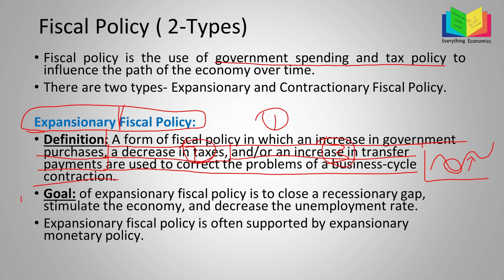The goal of expansionary fiscal policy is to close a recessionary gap, stimulate the economy, and decrease the unemployment rate. When the economy is in a recessionary period, the government uses this policy to reduce that gap and stimulate the economy. At this point the unemployment rate is high because there is not much activity going on and many people are unemployed, so expansionary fiscal policy is one of the main tools the government can use to recover.